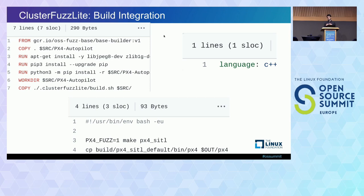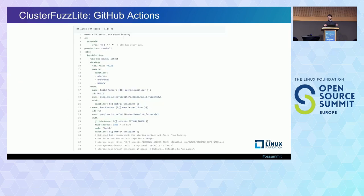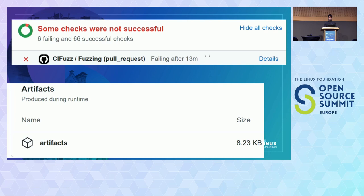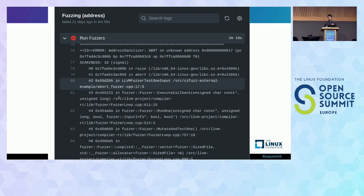ClusterFuzz Lite was born from OSSFuzz, and many OSSFuzz users also use it because they like the tighter feedback loop of getting crashes in CI. The integration is largely the same: first you integrate your build with ClusterFuzz Lite using a Dockerfile, a one-line config file, and a bash script to build with our CFlags. To actually run ClusterFuzz Lite, you configure your CI system to use it. On GitHub, this is really trivial — you can literally just copy a file, and that'll run ClusterFuzz Lite for you in GitHub Actions.